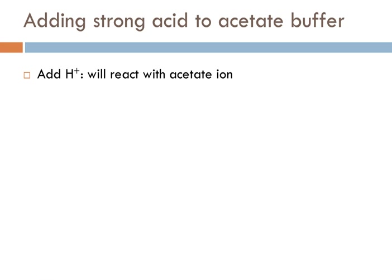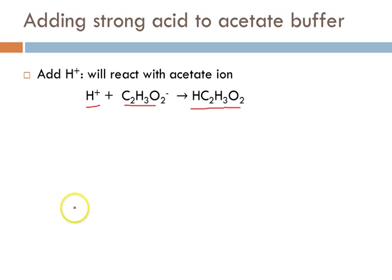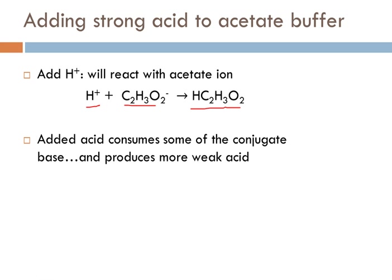Let's do this with equations. H+ is going to react with acetate ion — one H+ reacts with one acetate to form one acetic acid molecule. Every mole of acid that I add is going to react with an equal number of moles of the conjugate base and make equal numbers of moles more of that weak acid in the buffer system. The net effect: the pH is going to go down, since I added some acid — but it's going to be a very small change in pH, much smaller than if I had added that same amount of acid to a non-buffered solution.